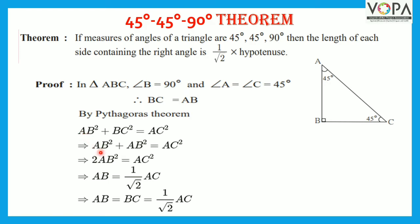Therefore, AB square plus AB square is equal to AC square. This gives us 2AB square is equal to AC square.